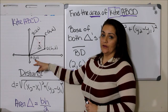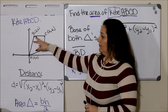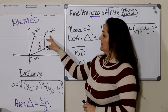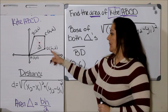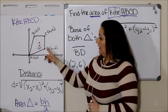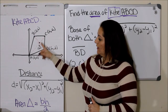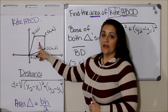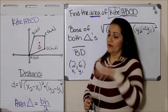Point A is at the origin, zero zero. Point B is at two six. Point C is at six six. Point D is at six two. I also have the diagonals marked, and the diagonals cross at point Z which is four four.